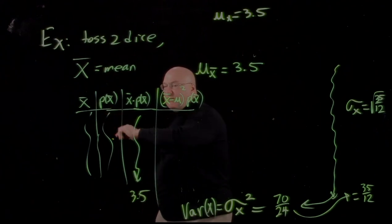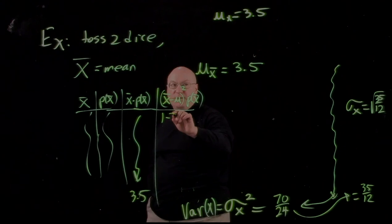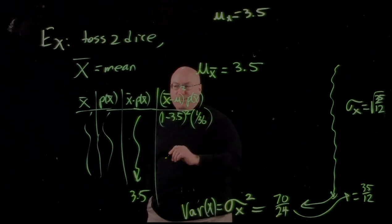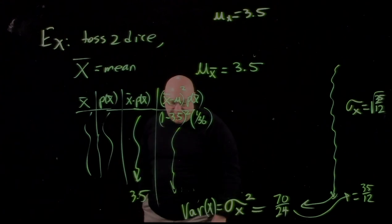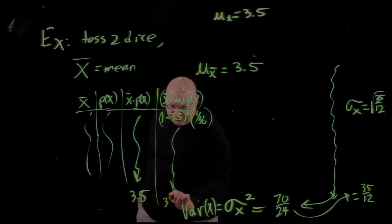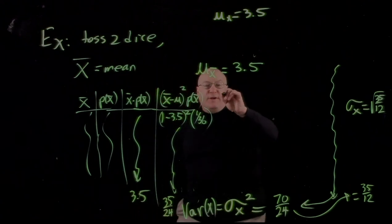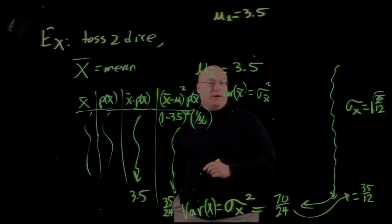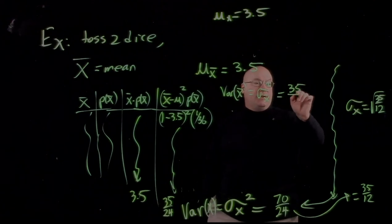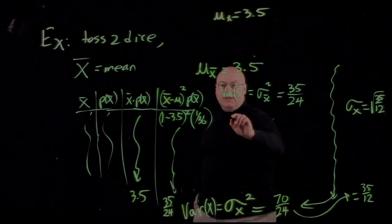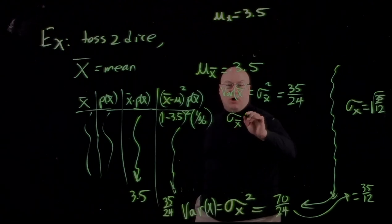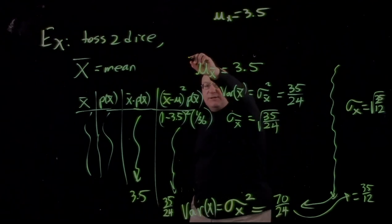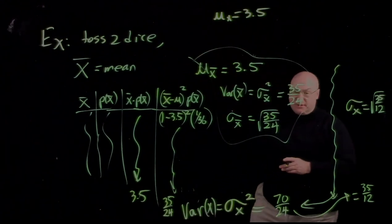The very first possible value of x-bar was 1, so we get (1 minus 3.5) squared times the probability, which was 1/36 — and so on for the rest. When you add all those up, you get the variance of x-bar, also denoted sigma squared sub x-bar, which is 35 over 24. So the standard deviation of x-bar is the square root of 35 over 24. Work through all that and make sure you can get it on your own.